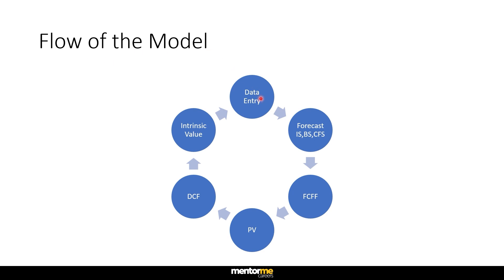Summarizing the flow of the model: first is the data entry, where depending on the kind of company you're forecasting and what kind of data is available, you do the data entry part. Then you forecast the income statement, balance sheet, and cash flow to derive the free cash flow to the firm. We will find the present value of the FCFF, which will give us the discounted cash flow value. Since we are forecasting FCFF, we're going to get enterprise value. From enterprise value, adjusting for debt and cash gives you the equity value, which will finally give you the intrinsic value.